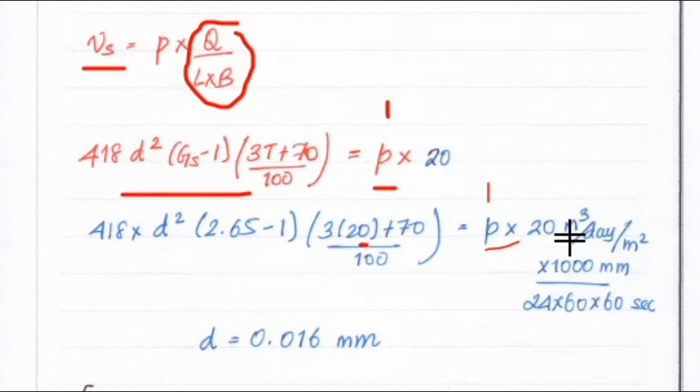Now we put 1000 over here divided by 24 into 60 into 60. We convert day into seconds. Solving this we got the value of D equal to 0.016 mm.